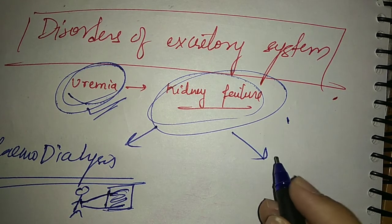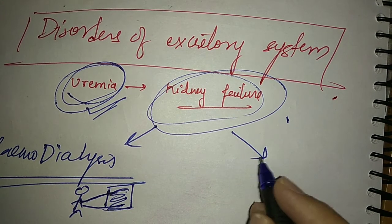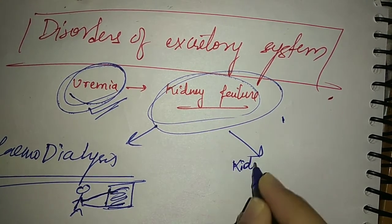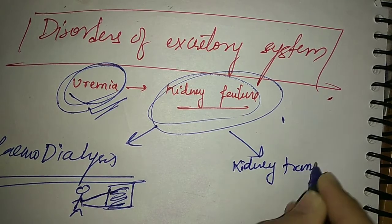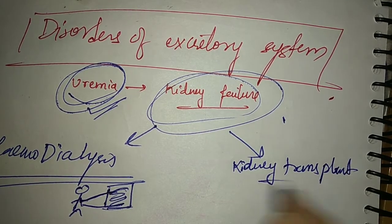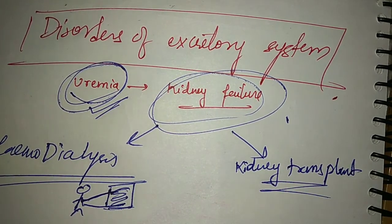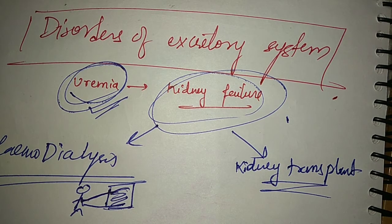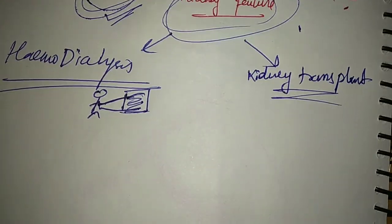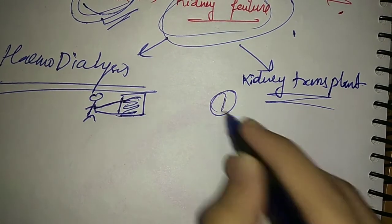Then the second option for this person is that they can get a kidney transplant. But kidney transplant is not a simple task. It's not very easy. What can happen?